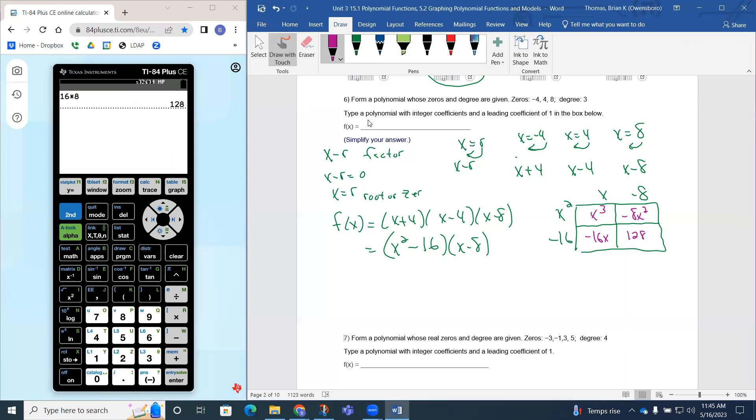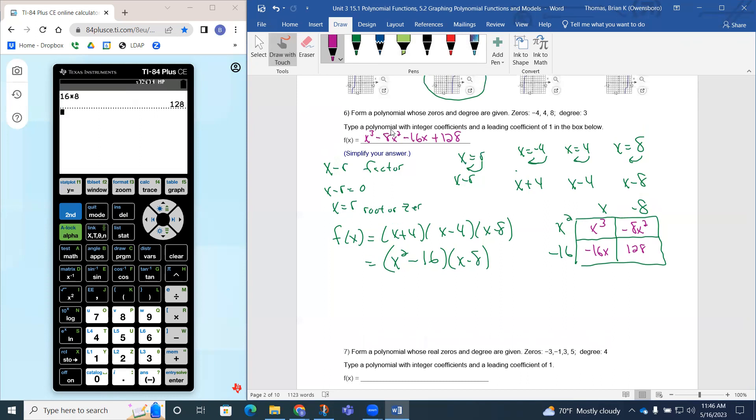So that's going to be my four terms. So this is going to be x cubed minus eight x squared minus 16x plus one twenty eight. So now I said it is a degree three and I said this is a degree three polynomial. So all that is checking out. So that would be what they're looking for.